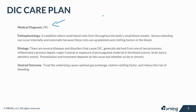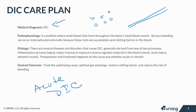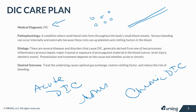DIC is a condition where small blood clots form throughout the body's small blood vessels. Serious bleeding can occur internally and externally because these clots use up platelets and clotting factors in the blood. Acute DIC develops within a few hours or days and leads to serious bleeding. Chronic DIC develops over weeks or months and doesn't usually lead to excessive bleeding, but to the formation of more clots.